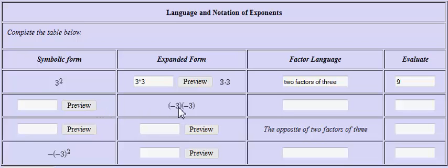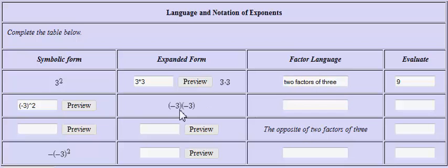In the next problem, they give it in expanded form: negative three is being multiplied by negative three. The right way to write this in symbolic form is to put negative three in parentheses, then hit shift+6 to get the caret key to raise to the power of two. This means negative three is the base, and that is what you're multiplying by itself. The factor language would be two factors of negative three, so type 'two factors of negative three.'